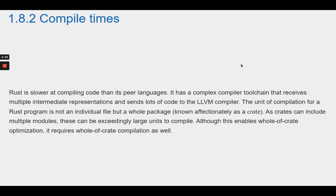Section 1.8.2 Compile Times. Rust is slower at compiling code than its peer languages. It has a complex compiler toolchain that receives multiple intermediate representations and sends lots of code to the LLVM compiler. The unit of compilation for a Rust program is not an individual file, but a whole package, known affectionately as a crate. As crates can include multiple modules, these can be exceedingly large units to compile. Although this enables whole-of-crate optimization, it requires whole-of-crate compilation as well.